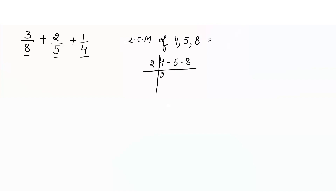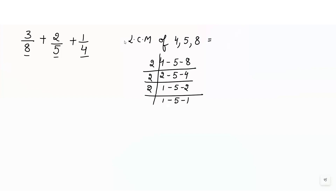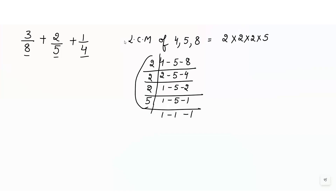So LCM of 4, 5, and 8. Using the prime factorization method: 2, 2s are 4, then 5, 2 4s are 8. Continuing the factorization, we get 2, 1, 5 and 1, then dividing with 5 we write 1, 1 and 1. So the LCM is 2 × 2 × 2 × 5, which equals 40.